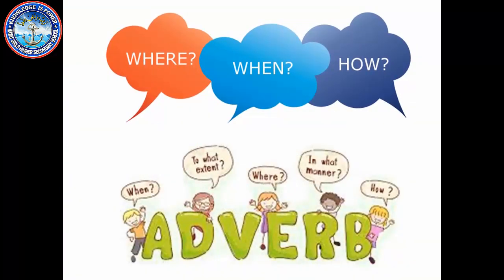To sum up today's lecture: an adverb is a word that adds something to the meaning of a verb. There are seven kinds of adverb but we studied four that are more common and used in daily life — words like really, very, always, happily, slowly, unfortunately, and so on. Adverb gives answers to where, when, how, to what extent, and in what manner an action happens, and it modifies verb, adjective, and adverb itself.